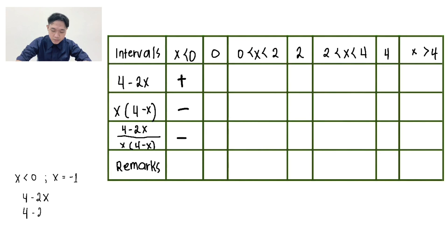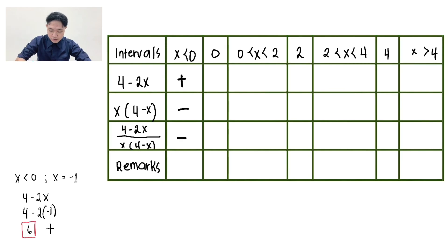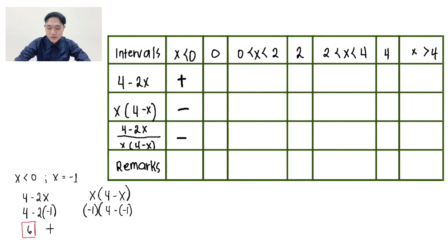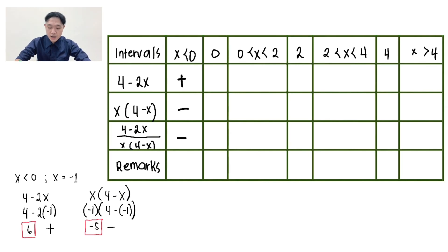Substitute negative 1 into 4 minus 2x: 4 minus 2 times negative 1. The answer is positive 6, so the sign is positive. For the denominator x times the quantity of 4 minus x, substitute negative 1: negative 1 times the quantity of 4 minus negative 1. The answer is negative 5, so the sign is negative. Since positive divided by negative is negative, the sign of the fraction is negative.